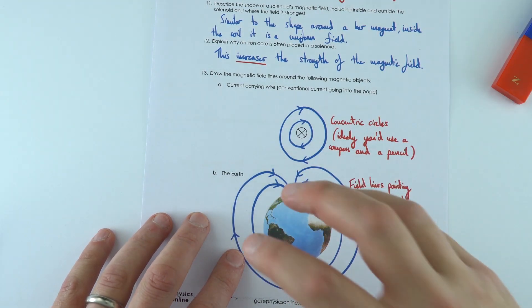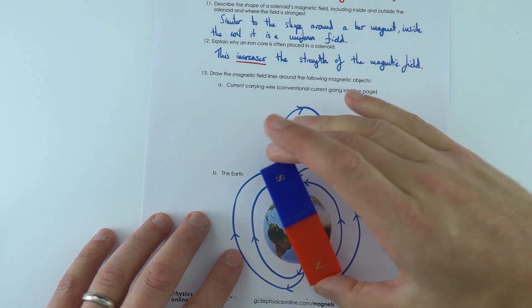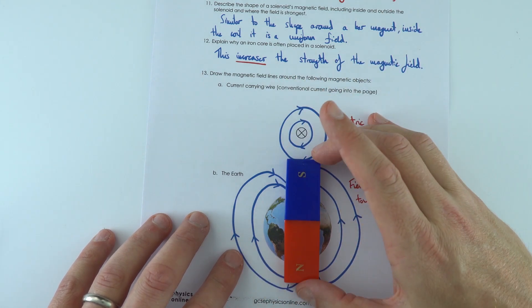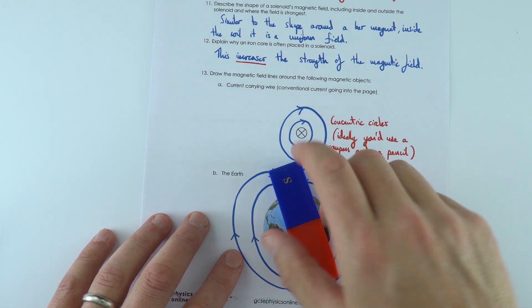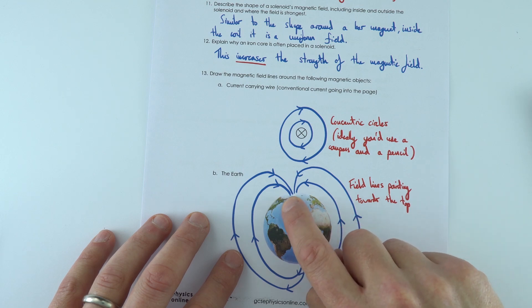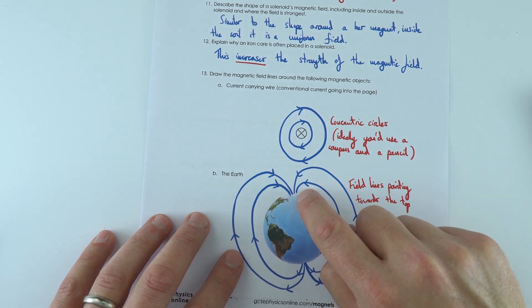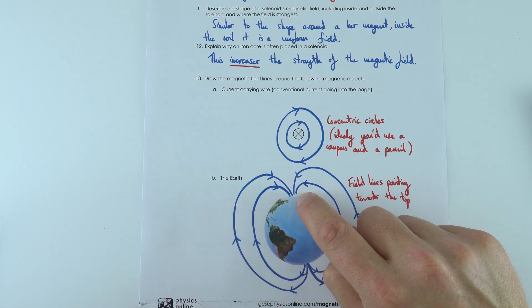And again, these are just quick sketches. And I also showed that this one here is rather than being completely vertical, it's slightly to the side, because the magnetic north pole is in a slightly different place to the geographic north pole.